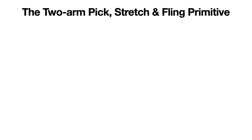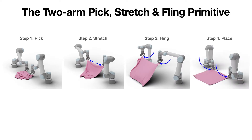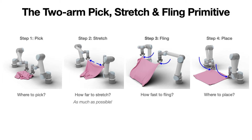Our dynamic motion primitive involves first picking up the cloth, stretching it, flinging it with a high velocity, then placing it down. To perform this primitive, we need to choose where to pick, how far to stretch, how fast to fling, and finally where to place the cloth. However, for the task of cloth unfolding, there are some natural answers to these questions. We always want the cloth to be as stretched out as possible without actually tearing it, and we'd always want to place the cloth down somewhere in the workspace where it's easy to reach again. We propose to fix the fling speed and instead focus on learning to choose two grasp points.